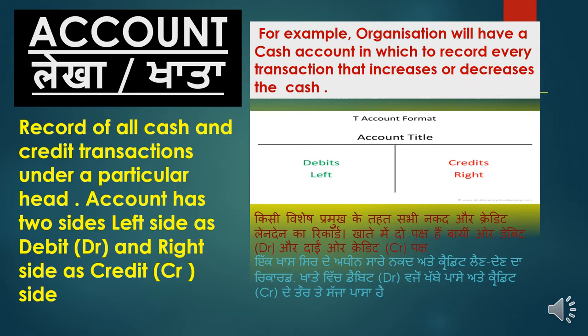For example, in our organization or business, if we have a cash account, then all cash-related transactions will be recorded there — whether the cash is increasing or decreasing. Similarly, if there is a machinery account, it records machinery-related transactions. If there are goods, we create a sales or purchase account. One important thing to keep in mind: every account has two sides — the left side is the debit side and the right side is the credit side.